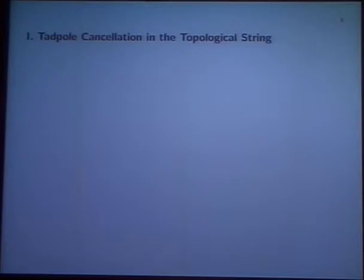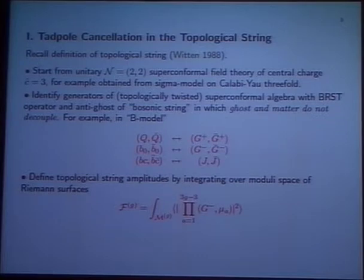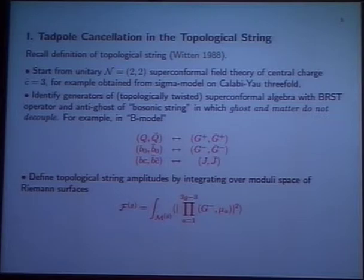Let me begin by explaining what I mean by tadpole cancellation in the topological string. We start from a unitary N=2 superconformal field theory with central charge 3. We identify generators of the superconformal algebra with BRST and anti-ghost of a bosonic string, in which the ghost and matter do not decouple. We define topological string amplitudes by integrating over the moduli space of Riemann surfaces the appropriate correlator from the N=2 CFT, where the μ's are the Beltrami differentials.